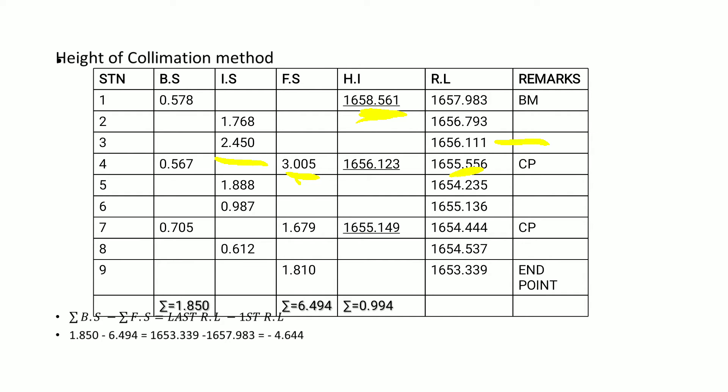When we get to station 4, because there is a backsight at that station, it means the instrument station was changed at that point, so we need a new height of instrument. We add the reduced level at station 4, which is 1655.556, to the backsight reading of 0.567.